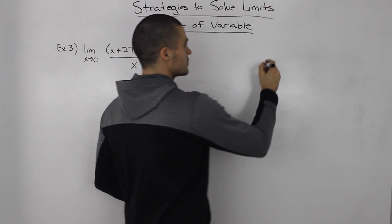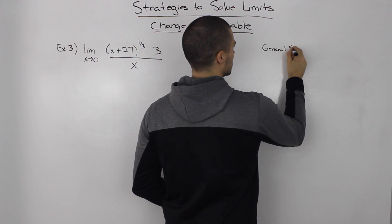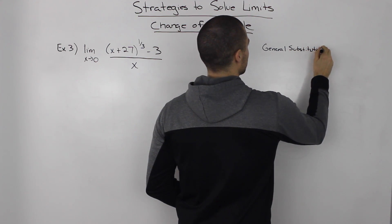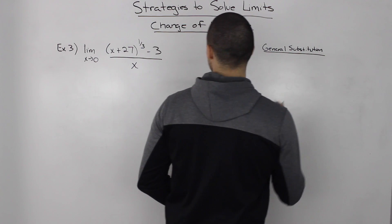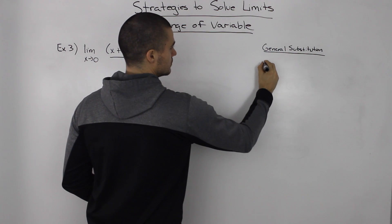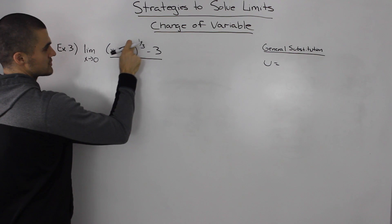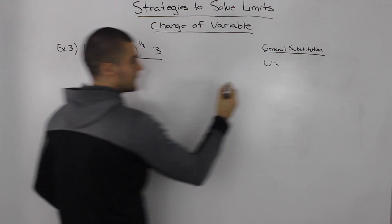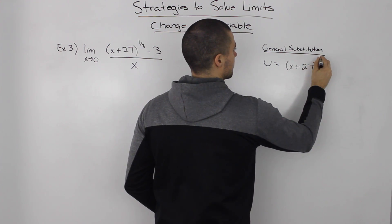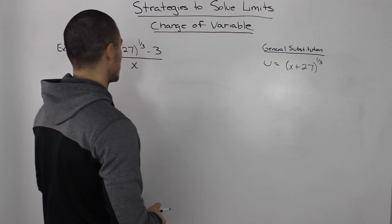So what we're going to do is make a general substitution. Whenever you get a question like this, you always let the new variable u equal this whole expression, (x+27)^(1/3). That's the general substitution that you make.